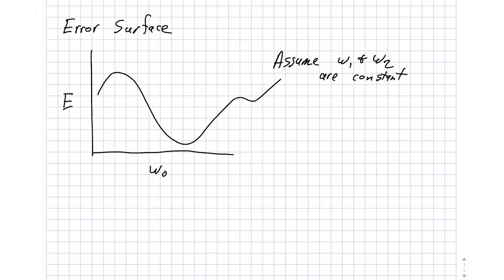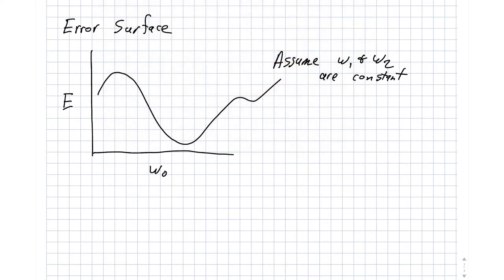So imagine a scenario where we have a w0 that's currently sitting right here. So maybe this is time t equals 0. That means that our error is right here. And because this function is differentiable, it means that we can compute what the slope is of the function. Mathematically, you could write this as d e d w0.